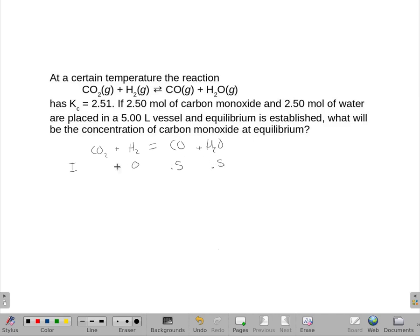So we're assuming that the hydrogen and CO2 are none. Therefore, these must go up when we reach equilibrium, and these must go down. So at equilibrium, we have x and x and 0.5 minus x and 0.5 minus x.